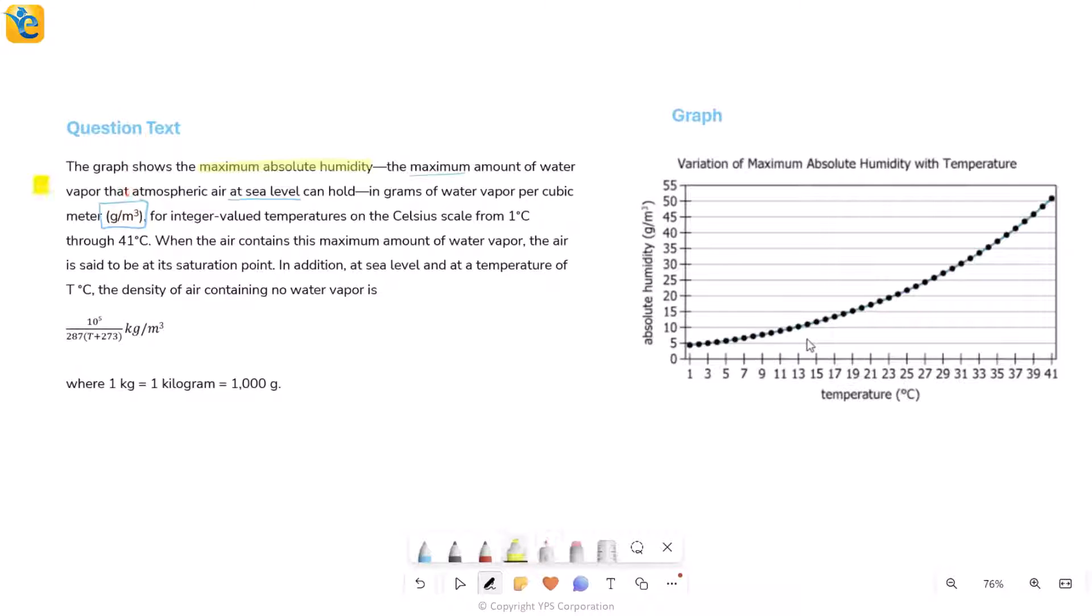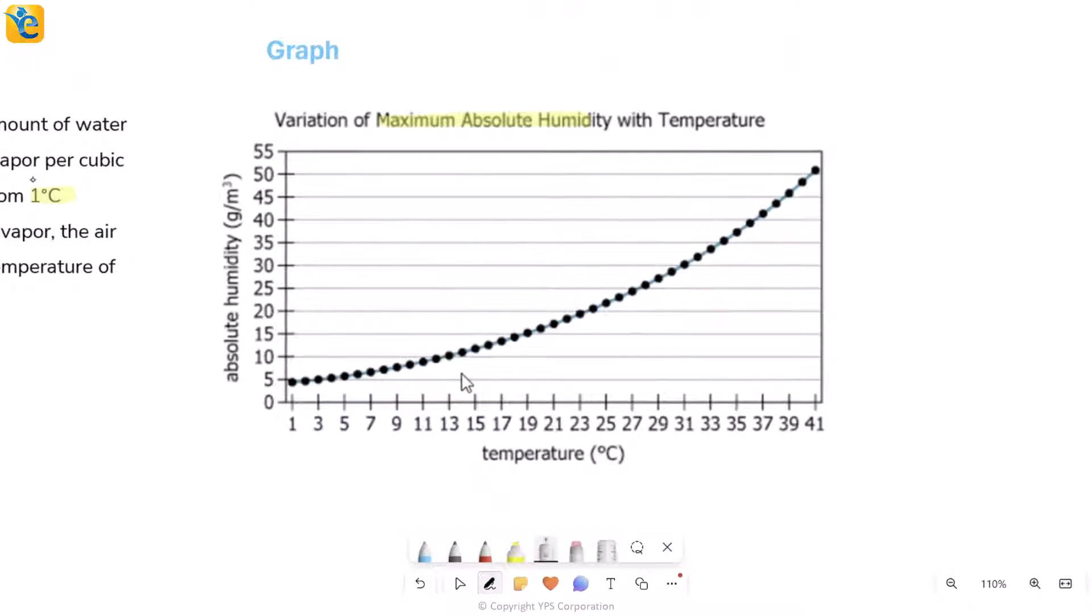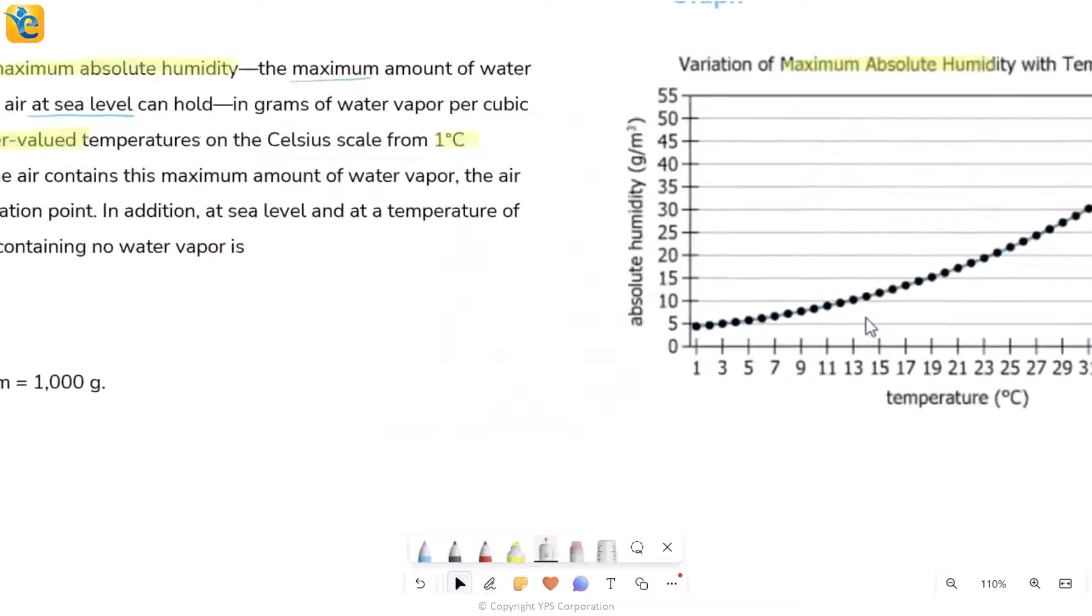This is exactly what you have on the graph as well. These values are given for integer valued temperatures on the Celsius scale from 1 through 41 degrees Celsius. The x-axis has these labels from 1 through 41, the temperature in degrees Celsius, and the maximum absolute humidity on the y-axis. If I simply read it at 1 degree Celsius, then the maximum amount of water vapor that one meter cube of air can hold is 5 grams. Similarly, you can read any of the other values.